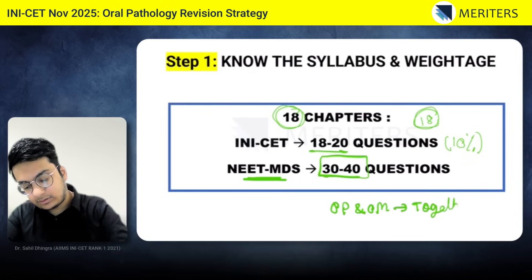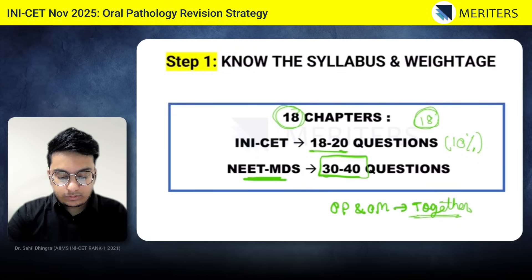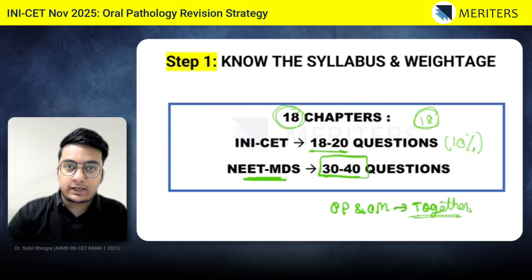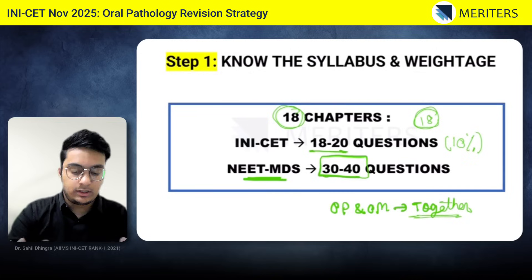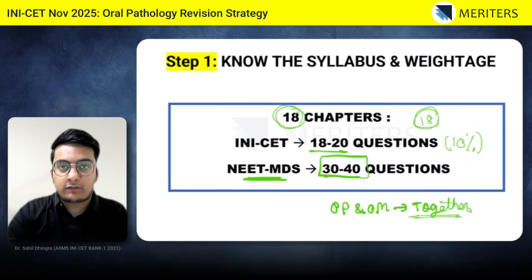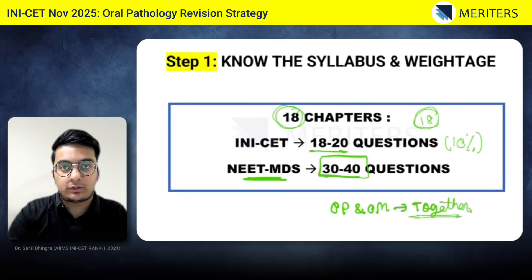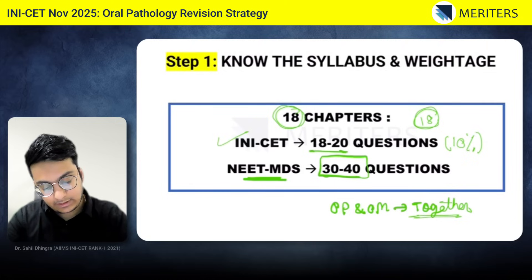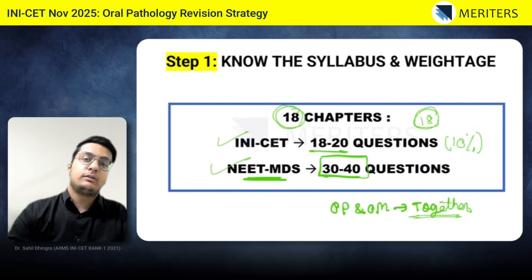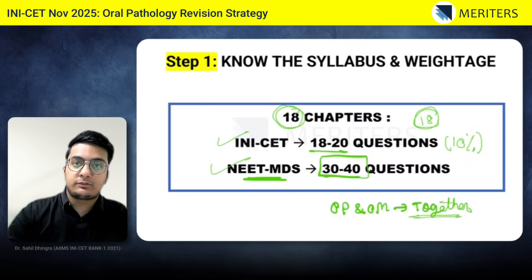You have to study both oral pathology and oral medicine together because they are synced — most of the topics are exactly the same. In BDS, we divide them into third year and final year, studying oral pathology in third year and oral medicine in final year. But when preparing for NEET MDS or INICT, you must club oral pathology and oral medicine together, and study radiology separately from oral medicine. It is very important for both exams — around 20 questions in INICT and around 40 questions in NEET MDS.